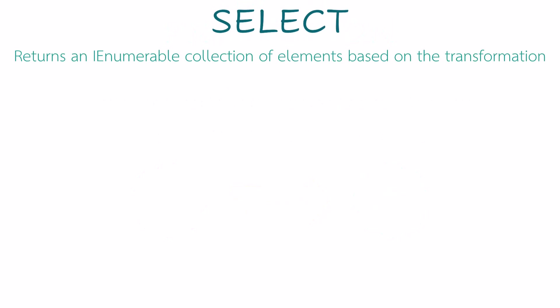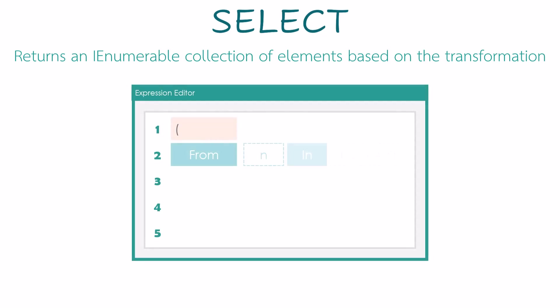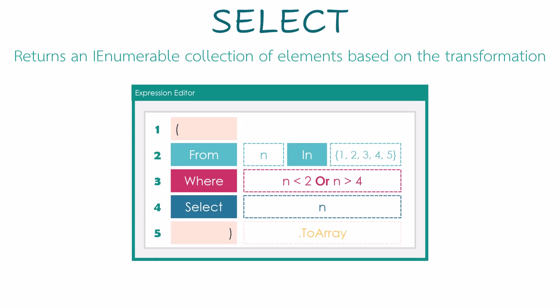The select operator returns an IEnumerable collection of elements based on a transformation function. Let's look at the following query to understand how this operator works. I will explain the query step by step. We have an array which contains five numbers. In this line we go through all numbers of the array using the variable n, which we defined in this line.